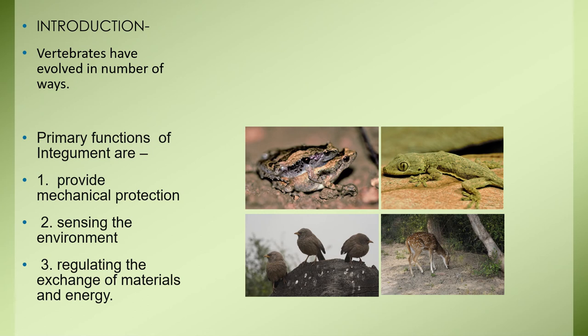Vertebrates have evolved in many ways, and so has their integument. In different taxa, the integument consists primarily of skin and its derivatives. Integument is the outermost covering of an organism, continuous with the lining of body openings and covering the appendages. It restricts the body of the organism, separating it from the environment and protecting it from foreign matter. The three primary functions are: providing mechanical protection, sensing the environment, and regulating the exchange of material and energy.